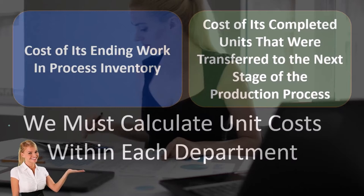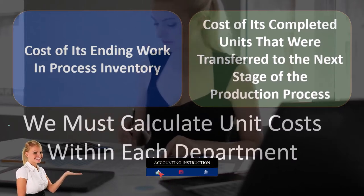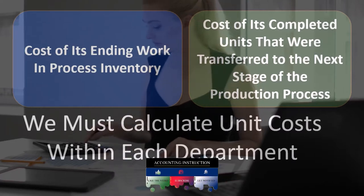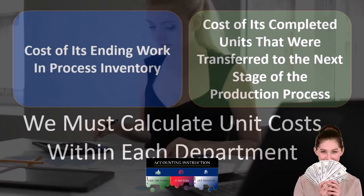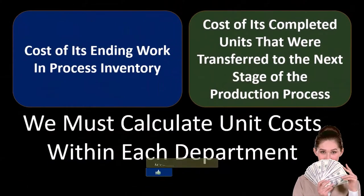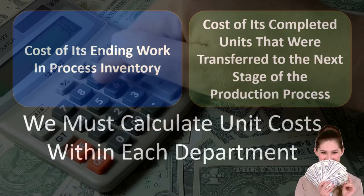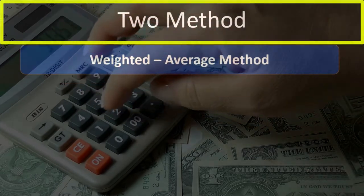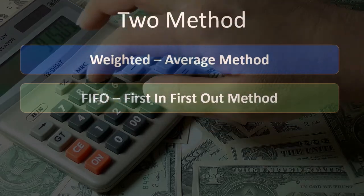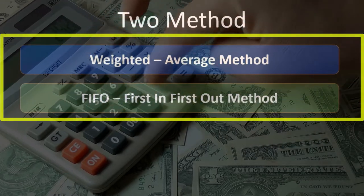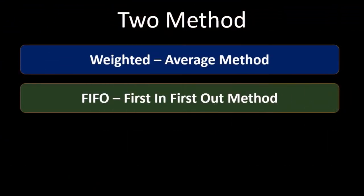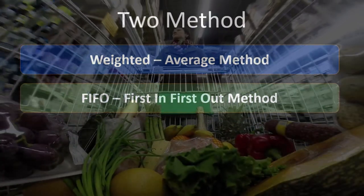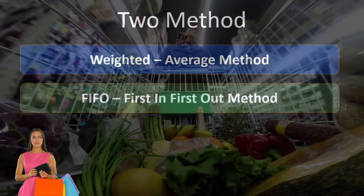In our example we have two departments: the production department and the packaging department. Because we're working with financial statement transactions and dollar amounts, we must calculate the units within each department. There are two methods we can use: the weighted average method and the first in first out method. You may recognize these as inventory flow assumptions used by merchandising companies — it's a similar assumption here, but the application looks a little different within the manufacturing process.